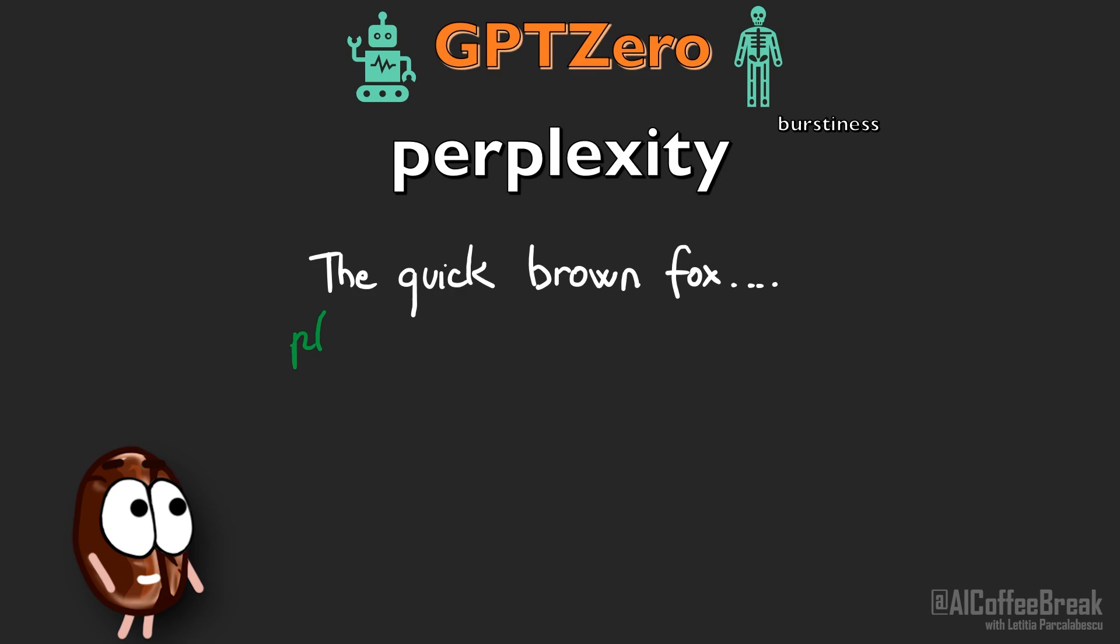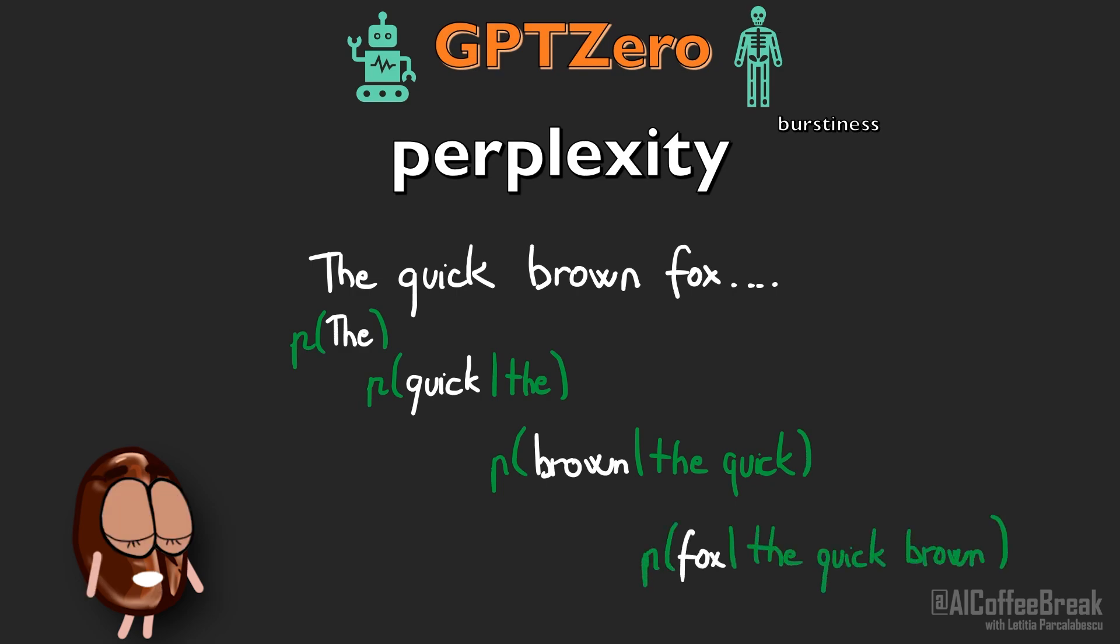To compute the perplexity, we go word by word and we compute how probable it is for a language model to have generated it, given the previous words. But how to get to these probabilities?